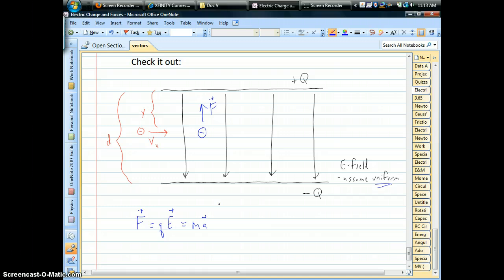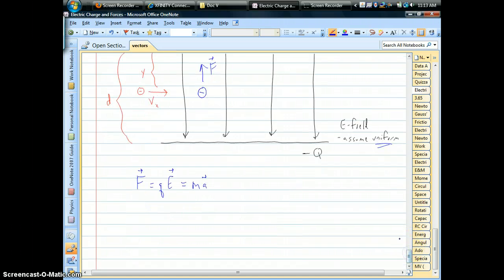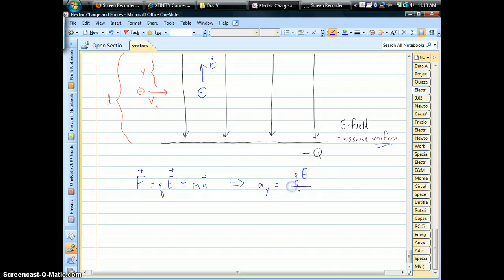So negative charges, remember, go opposite the electric fields in terms of directions. So what we have is we can find the acceleration. That's a vertical acceleration. So that will become important. That's part of our solution to projectiles.